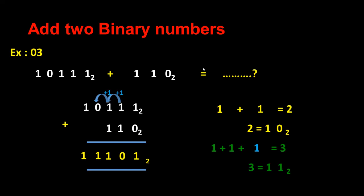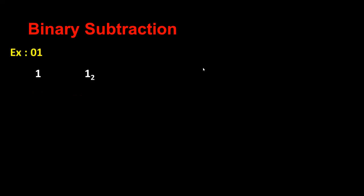Now let's do binary subtraction. How to do binary subtraction? I have a question like this: 1 1 0 1 1 minus 1 0 1 0.